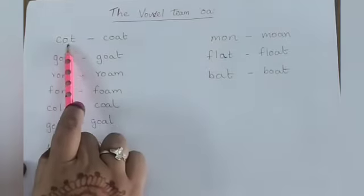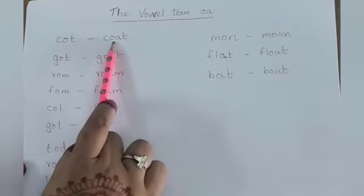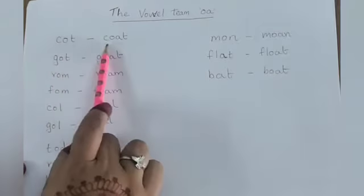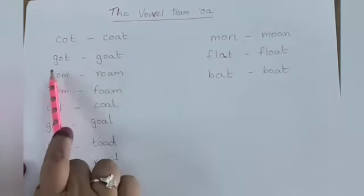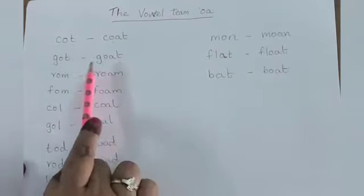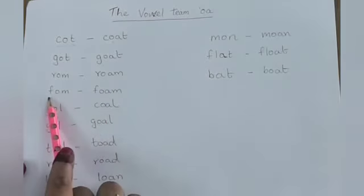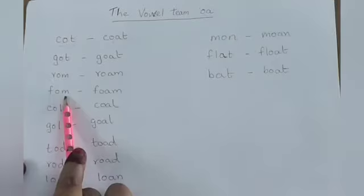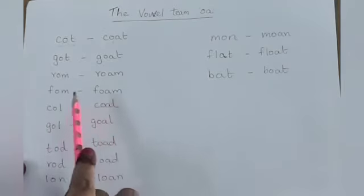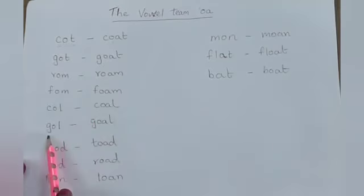First word: C-O-T. If we add A in it, C-O-A-T — coat. Then G-O-T — goat, G-O-A-T — goat. R-O-M — roam, R-O-A-M — roam. F-O-M — foam, F-O-A-M — foam. C-O-L — coal, C-O-A-L — coal. G-O-A-L — goal.